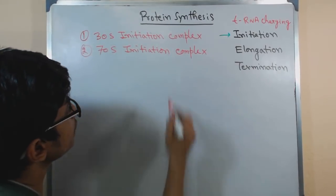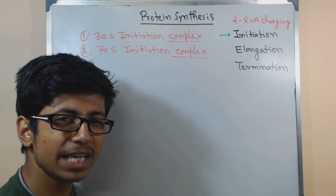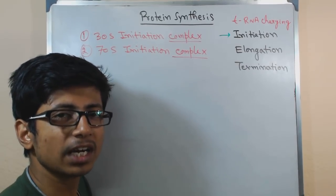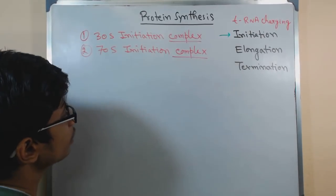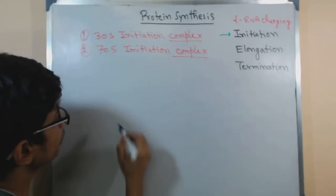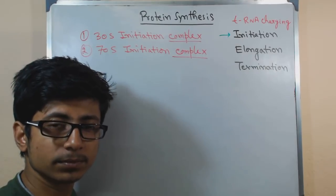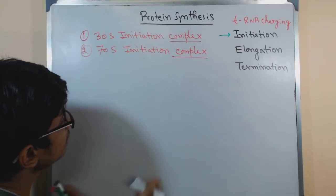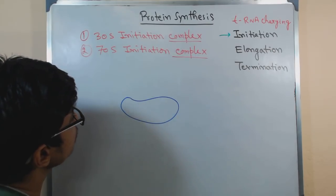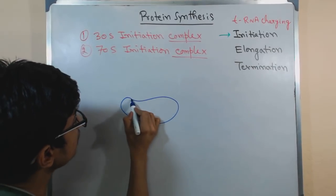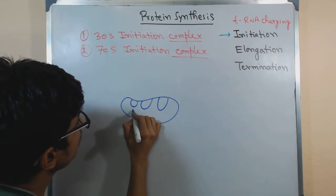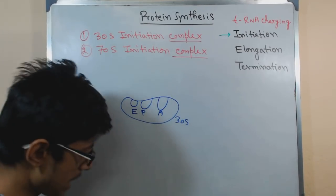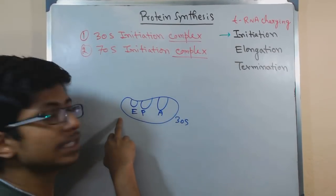Remember, initiation complex means there will be involvement of many different varieties of enzymes as well as translation factors, to finally produce a complicated structure which can start the initiation of translation. Beginning with that, we have the 30S subunit, and this 30S subunit has different regions — just like the regions found in the large subunit also — the sites for E, P, and A. There are three different sites in the ribosome. Now, there are initiation factors associated with this 30S subunit.